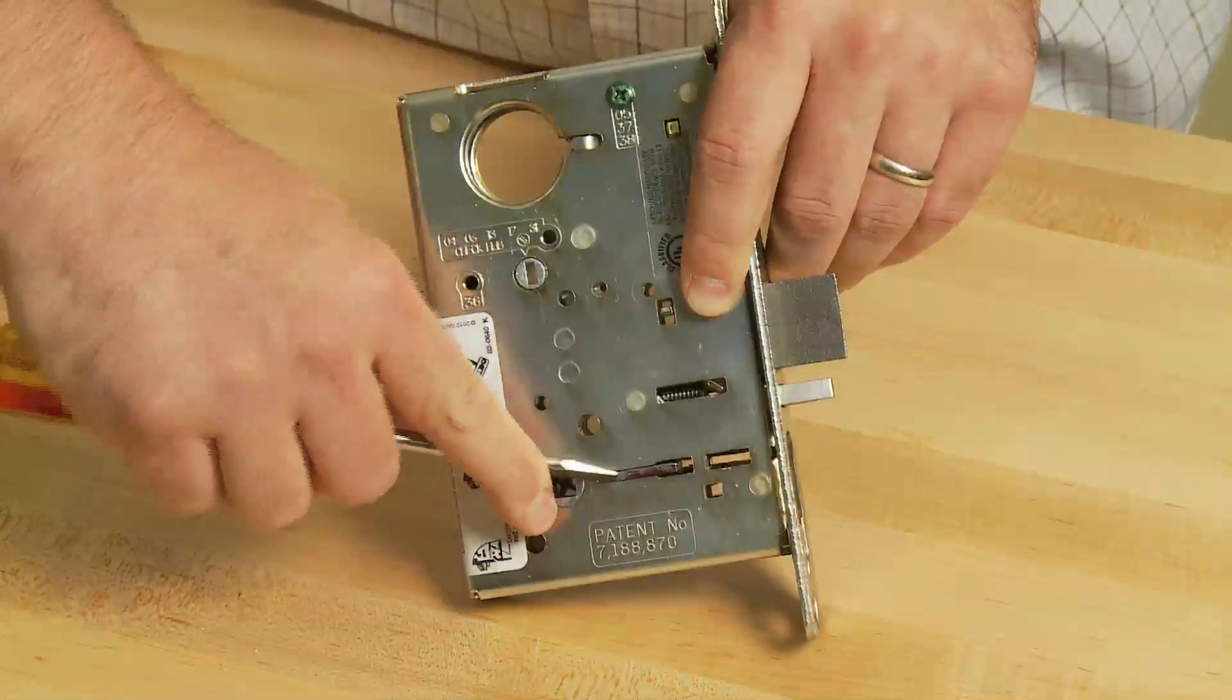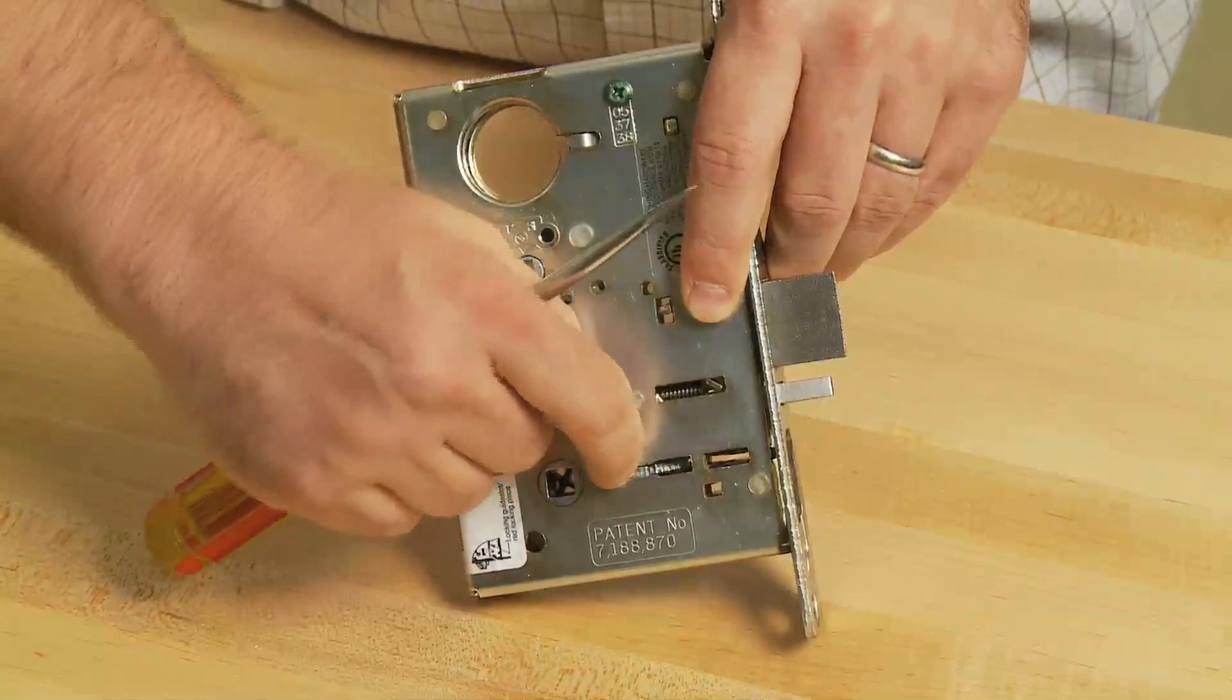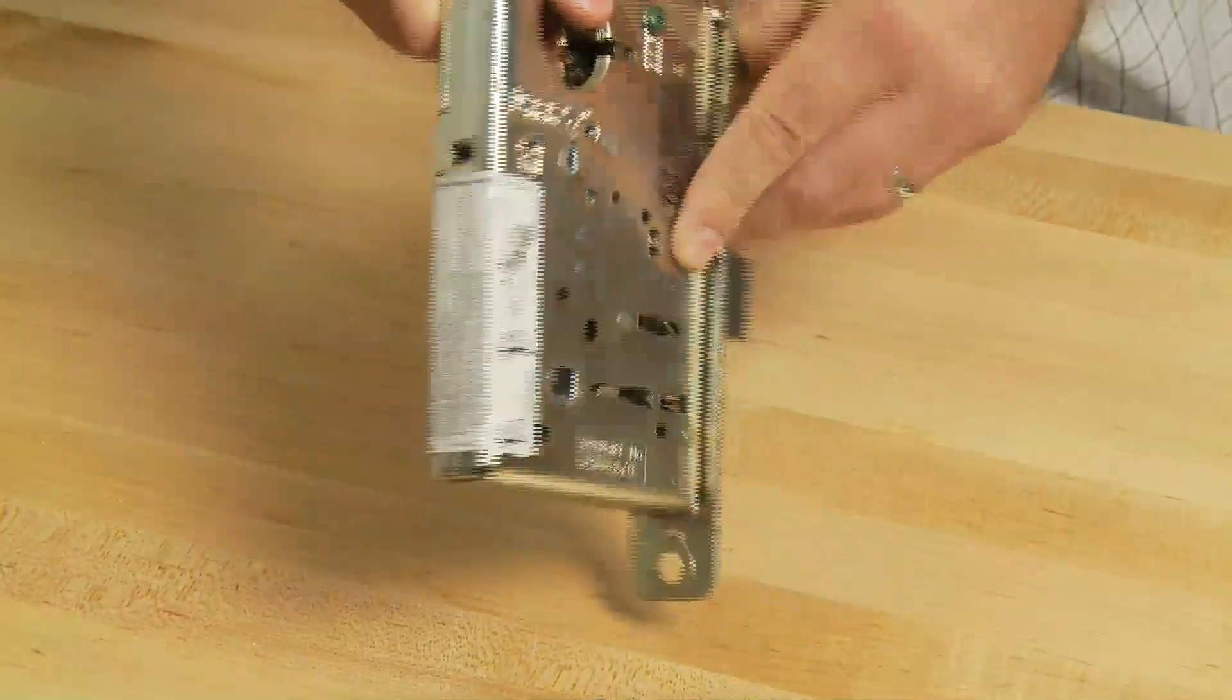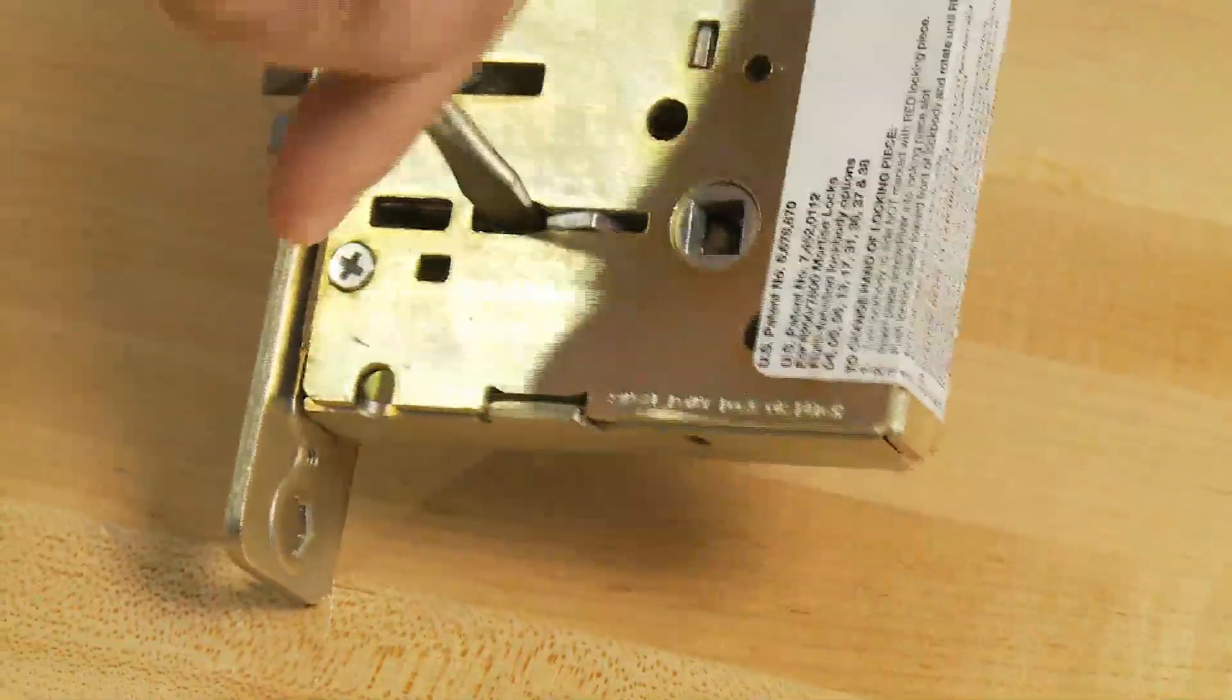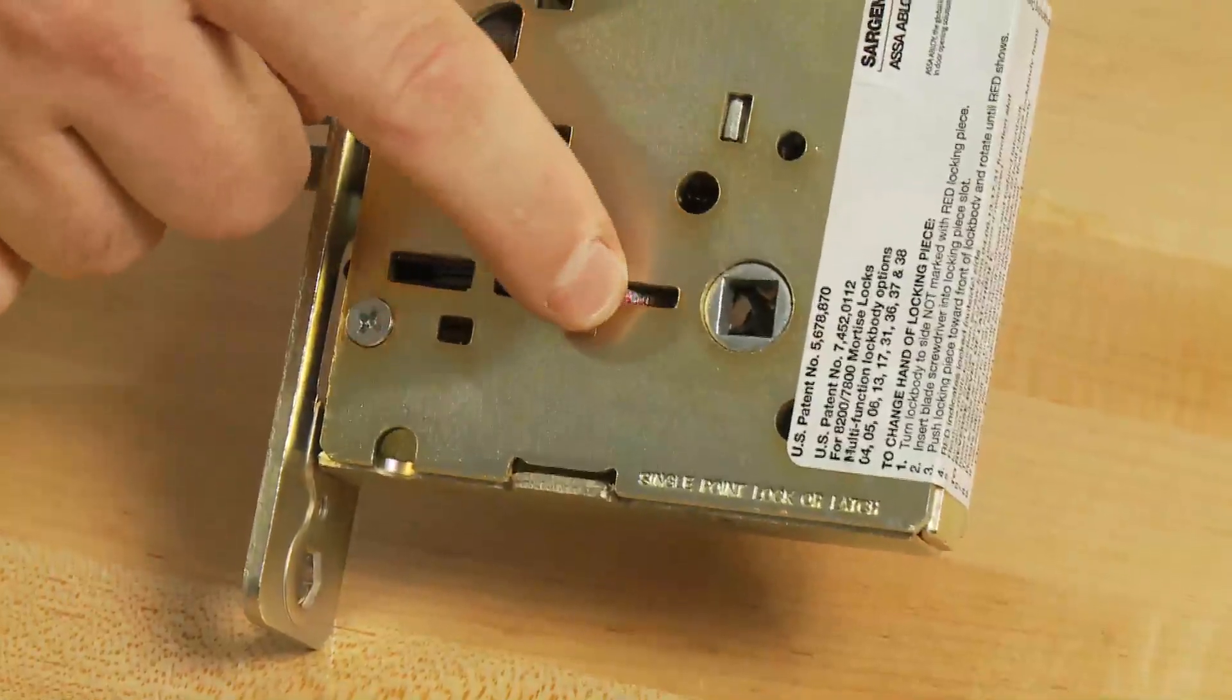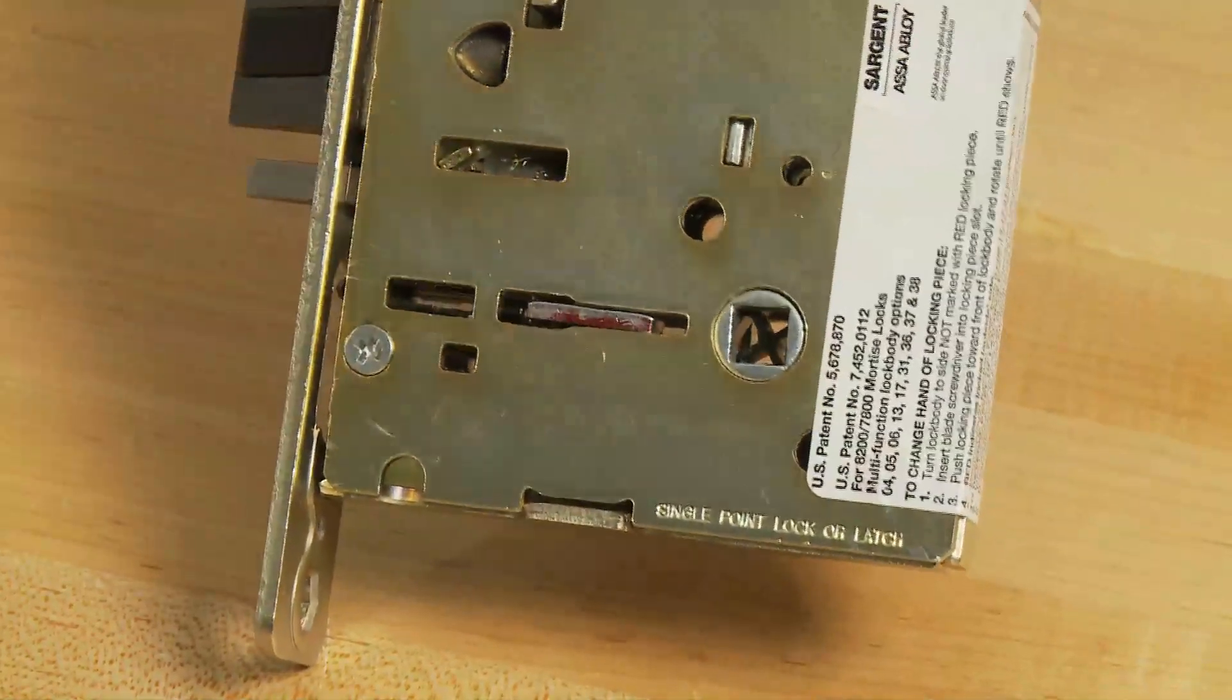Press the tip of a blade type screwdriver onto the locking piece slot to rotate the locking piece. Continue to push the locking piece toward the back of the lock body and rotate 180 degrees until the red surface is flush with the lock body on the opposite side.